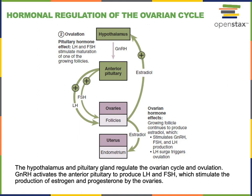Around the 14th day of the ovarian and uterine cycle, the control mechanism switches from negative feedback to a positive feedback mechanism, where estradiol stimulates the production of increasing levels of GnRH, leading to even higher levels of LH and FSH. As LH levels surge, this stimulates the process of ovulation — the release of the immature egg cell, known as a secondary oocyte, from the ovary.